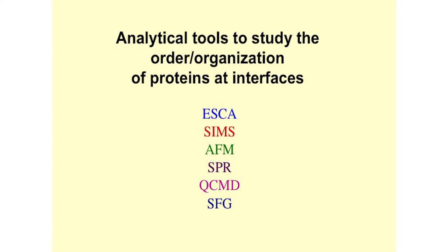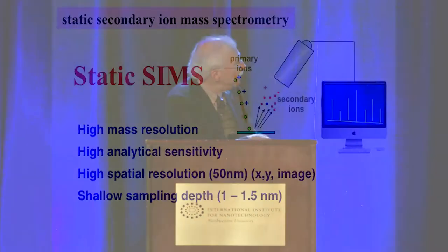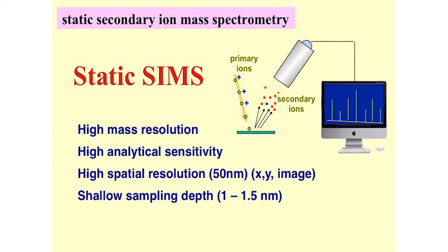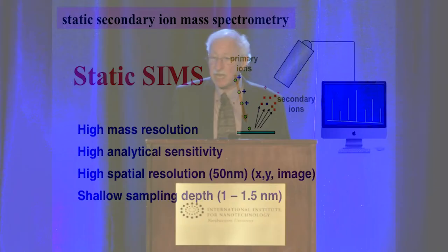Among our analytical tools, we found static SIMS particularly valuable. In the SIMS process, a beam of primary ions smashes into the surface, blasting off secondary ions that are measured with a mass spectrometer to give a mass spectrum of the outermost surface. Modern SIMS instruments have superb mass resolution, extremely high analytical sensitivity, spatial resolution down to 50 nanometers or less, and a very shallow sampling depth of one to one-and-a-half nanometers.